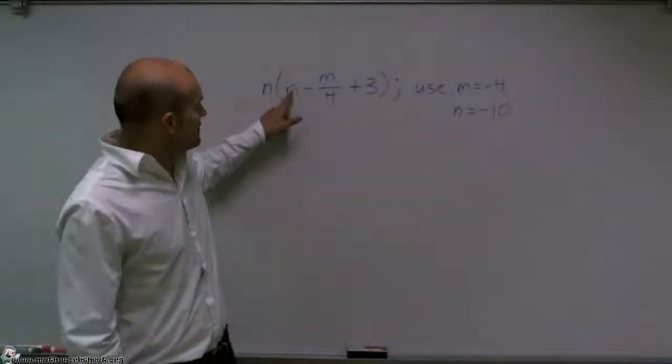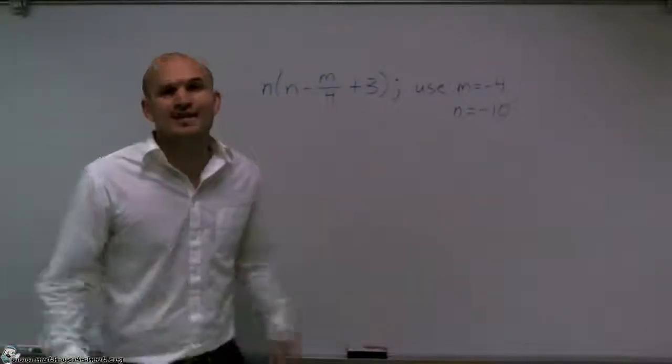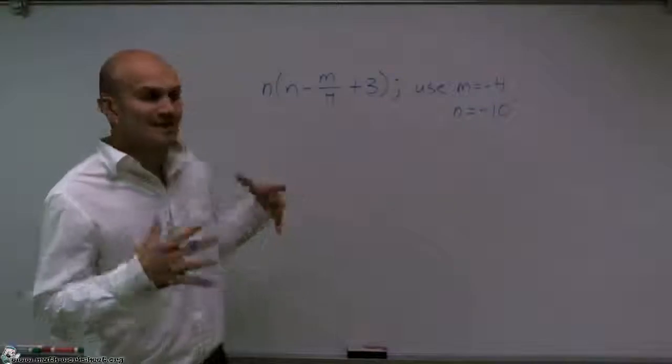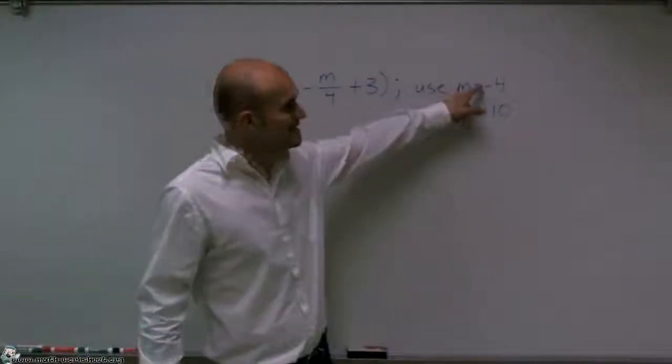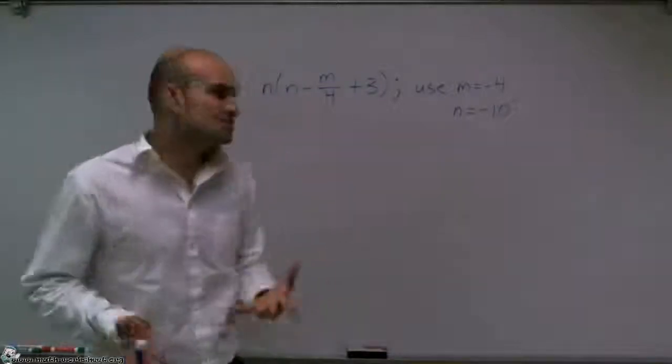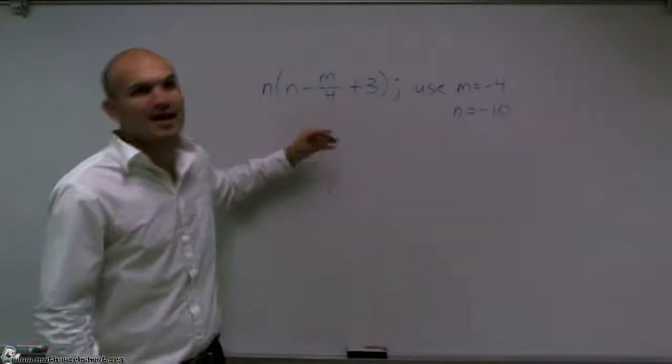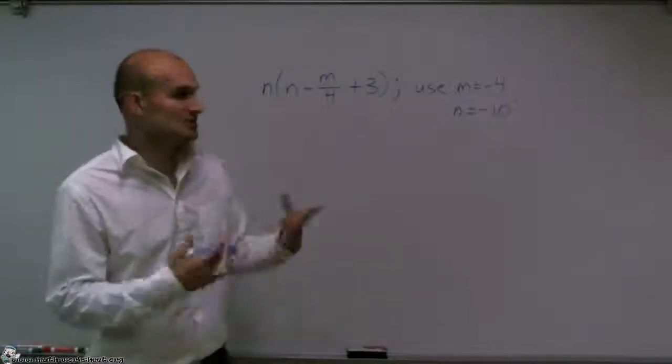So I have a variable n and I have a variable m. Now, usually with variables, we don't understand what they represent. But in this problem, they've given us the values for the variables they want us to use. So what we're going to do is substitute in those values for our variables and then use the order of operations to help us solve.